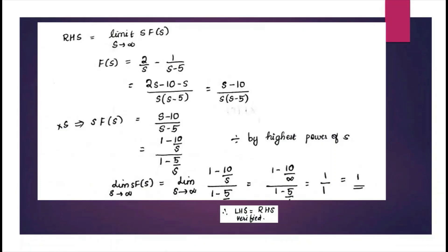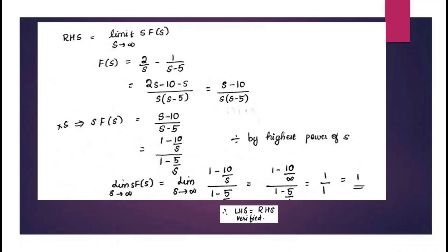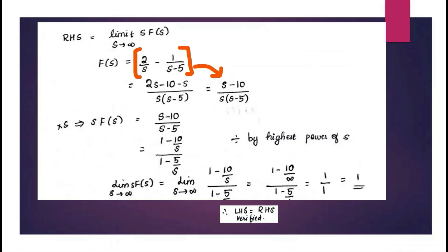Now let us prove the RHS. RHS is the limit of s·F(s) as s tends to infinity. First, let us find F(s): the Laplace of 2 is 2/s, and the Laplace of e^(5t) is 1/(s − 5). So F(s) = 2/s − 1/(s − 5), which simplifies to (s − 10) / [s(s − 5)]. Multiplying by s, the s terms in numerator and denominator cancel, leaving (s − 10)/(s − 5).